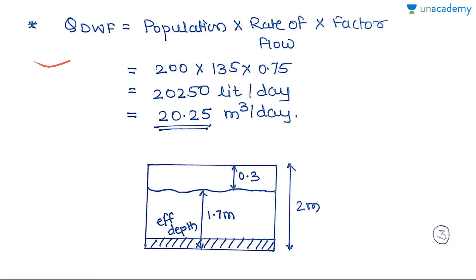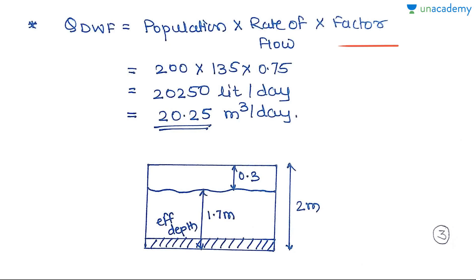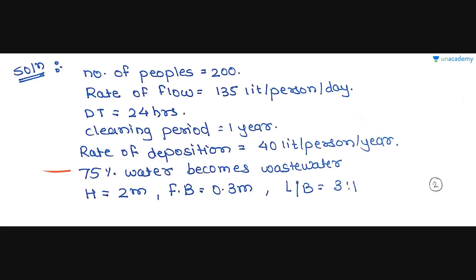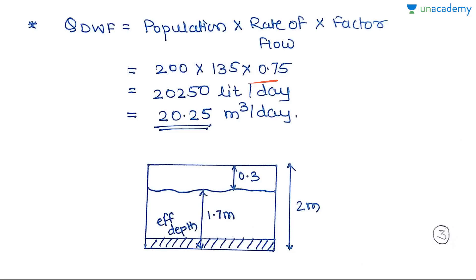The first thing we need to find is Q. For a septic tank, we consider only the dry weather flow. The dry weather flow formula is: population × rate of flow × factor. Population is 200, rate of flow is 135, and the factor is 0.75 (since 75% water becomes wastewater). So we get 20,250 litres per day, which converts to Q = 20.25 m³/day.